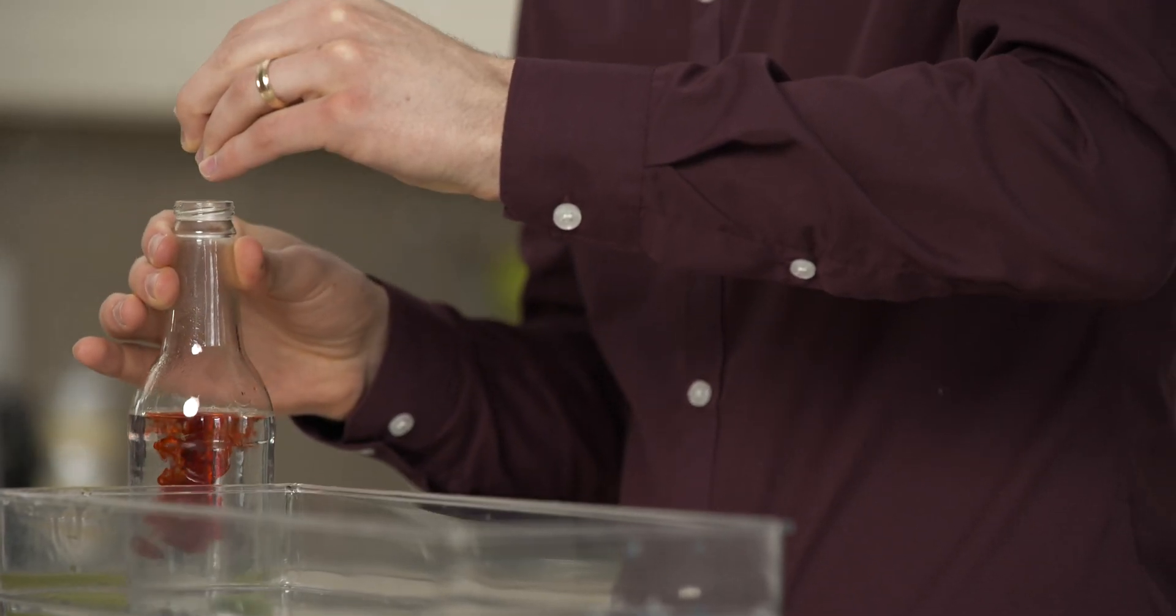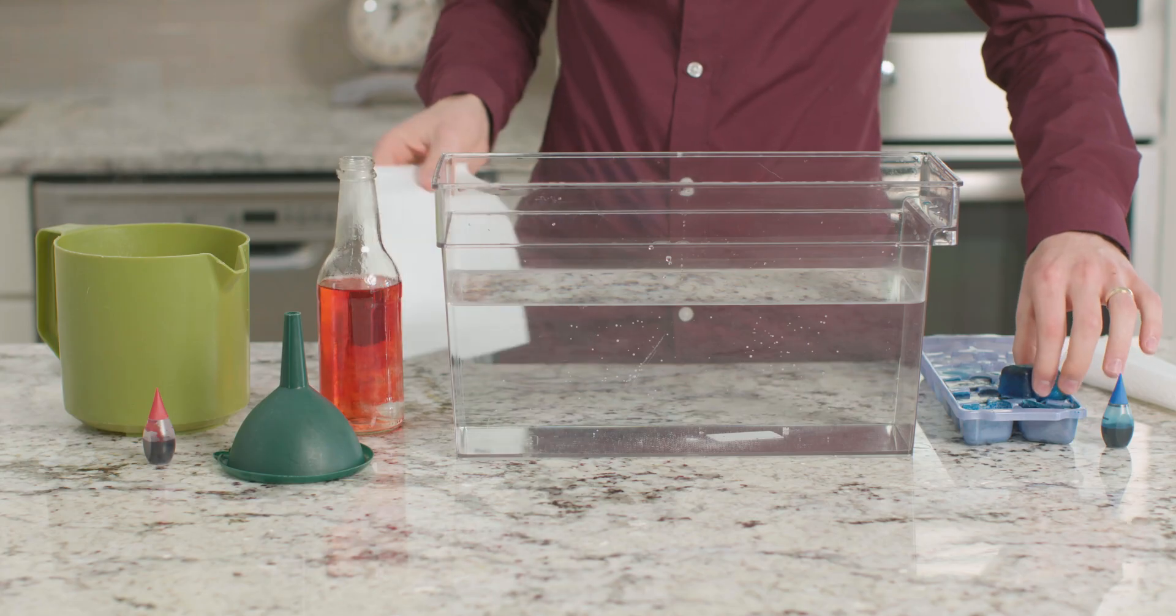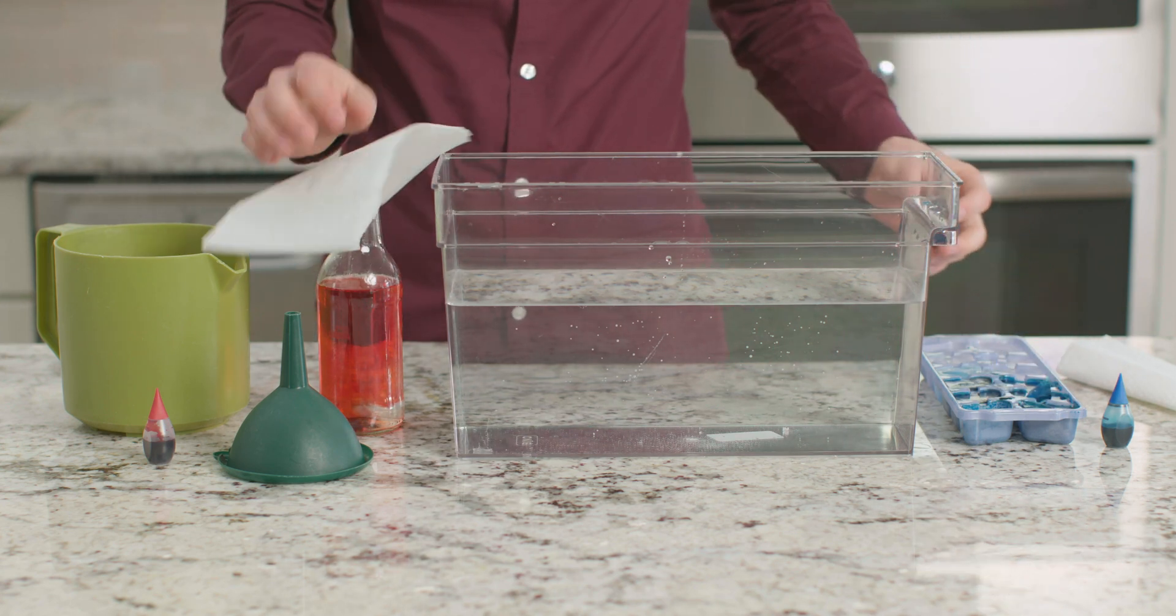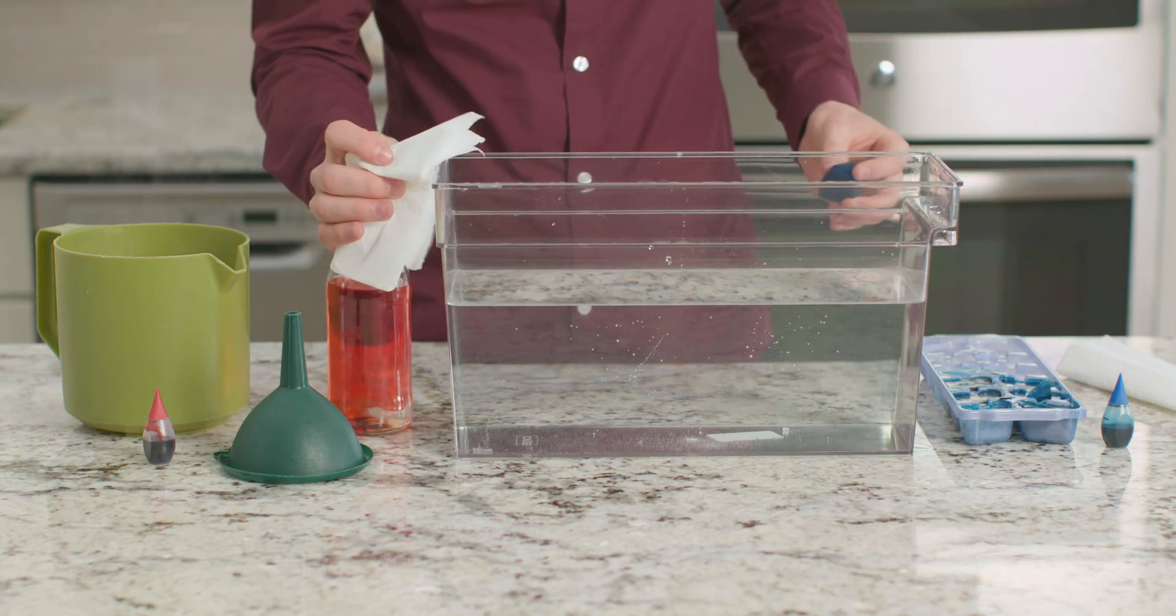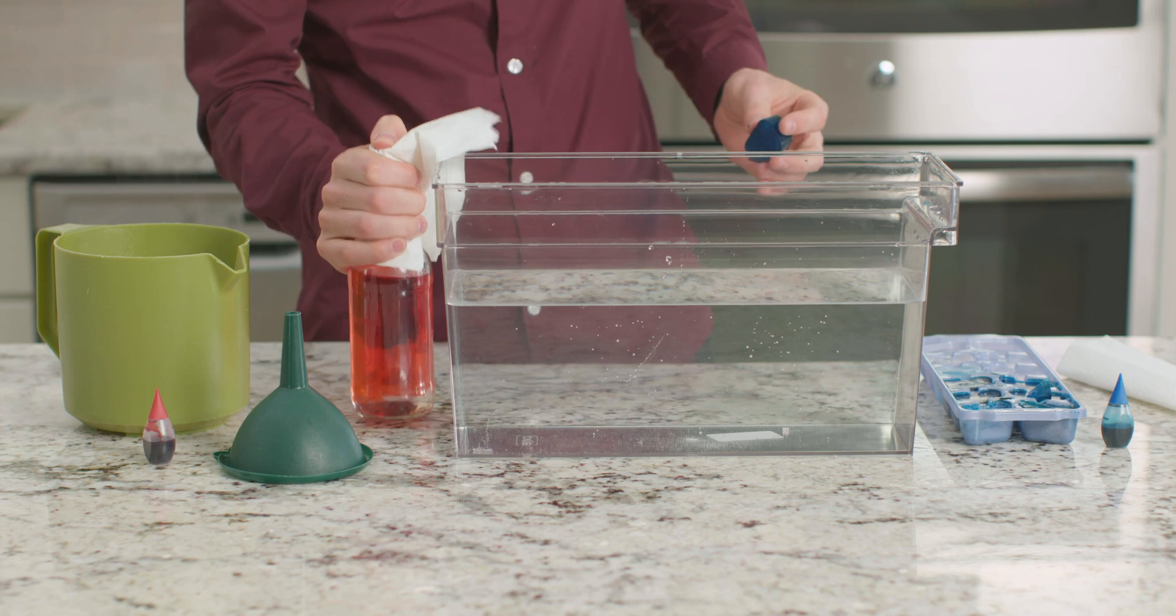Next I will add 10 drops of red food coloring to our bottle. In one hand I'm going to hold an ice cube and with the other I'm going to cover the opening of this bottle with a napkin.